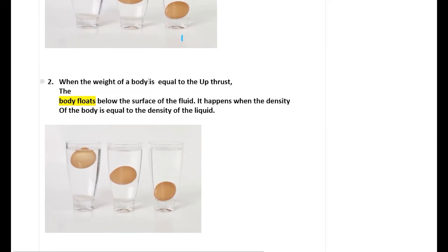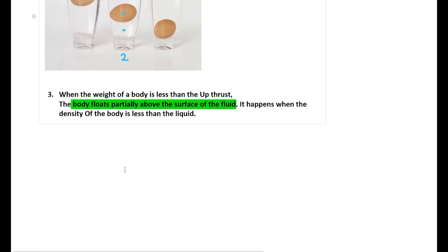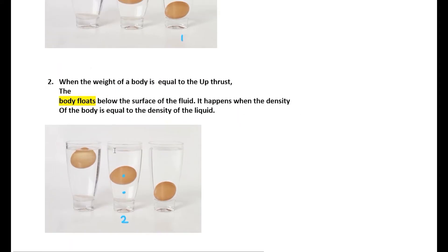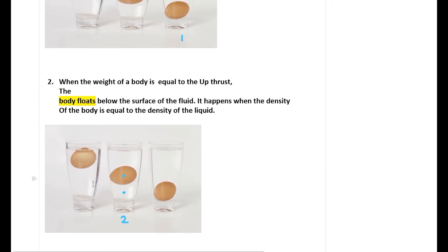The second case is when the weight of the body is equal to the upthrust — the body floats below the surface of the fluid. This happens when the density of the body is equal to the density of the liquid. The third case is when the weight of the body is less than the upthrust — the body floats partially above the surface of the fluid. This happens when the density of the body is less than the liquid.